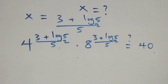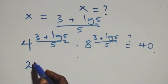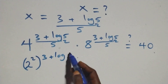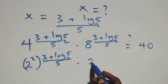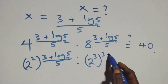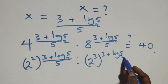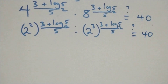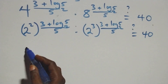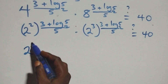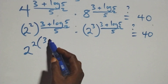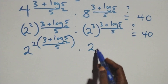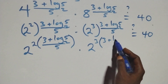We rewrite: 4 as 2 squared, raised to power (3 plus log₂5)/5, times also 8 as 2 cubed, raised to power (3 plus log₂5)/5, equals 40 on this side. Next step, we write this as 2 raised to power 2×(3 plus log₂5)/5, times 2 raised to power 3×(3 plus log₂5)/5.